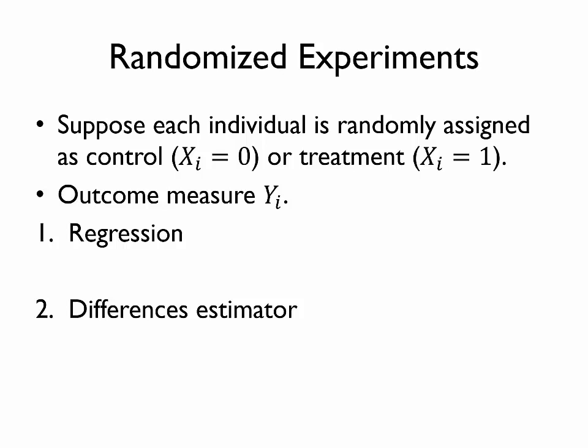We introduced the idea of randomized experiments in the video on potential outcomes and we'll return to that idea. Suppose that a researcher is conducting an experiment where she randomly assigns participants either to a control group which we denote as X equals 0 or a treatment group which we denote as X equals 1. So X sub i is a dummy variable indicating whether individual i is assigned to treatment. We would also have some outcome measure Y.